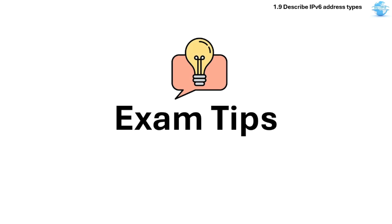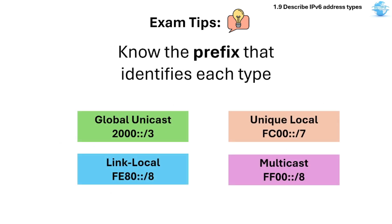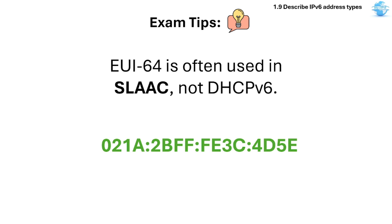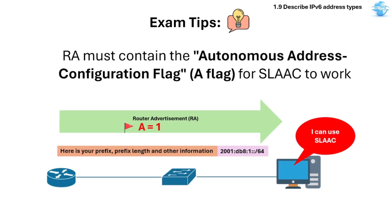Here are some exam tips. Remember that there's no broadcast in IPv6 — multicast replaces it. Note the prefix that identifies each type of IPv6 address. Always remember that EUI-64 is often used in SLAAC, not DHCPv6. Always keep in mind that SLAAC uses Router Advertisement messages from routers. And don't forget that RA messages must contain the A flag for SLAAC to work.